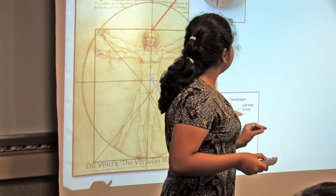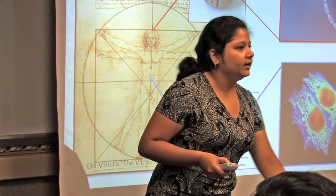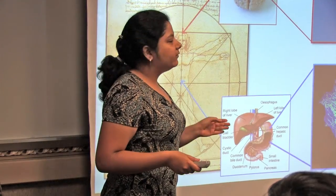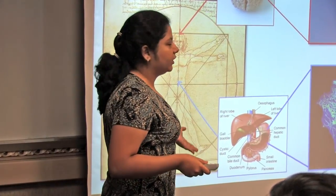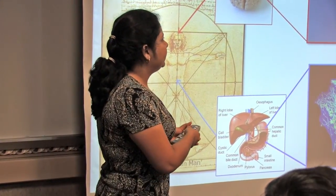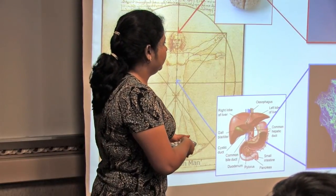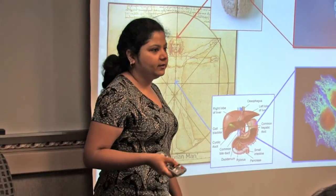Interestingly, each cell is very different in structure and in function — the difference is striking. However, there are certain unifying features in their structure and function as well. For example, all cells contain a nucleus, all cells contain a boundary which is a cell membrane, and so on.